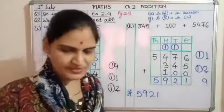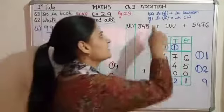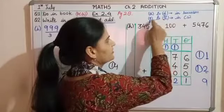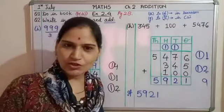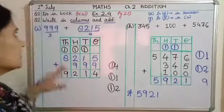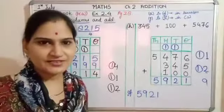These two sums we have solved. You have six questions to solve in your notebook. And which are these parts? G, H, I, J, K, L. Parts from G to L you will get in pdf form. Do it in your notebook. You will also get question number one, but try it yourself. Well children, thank you.